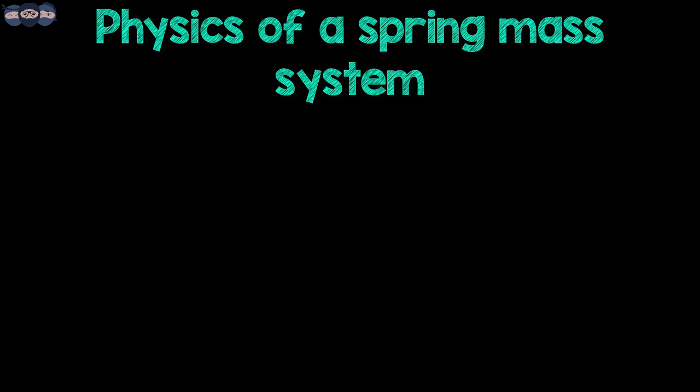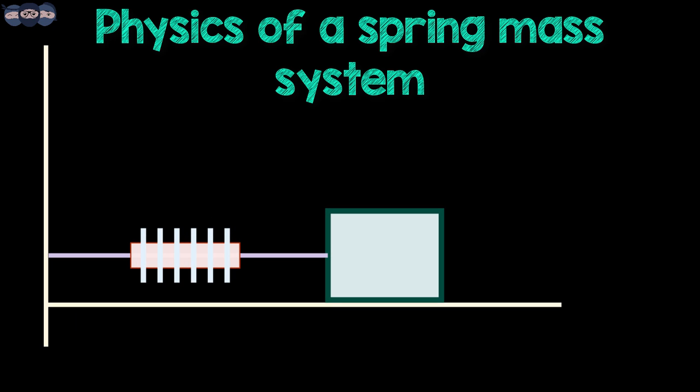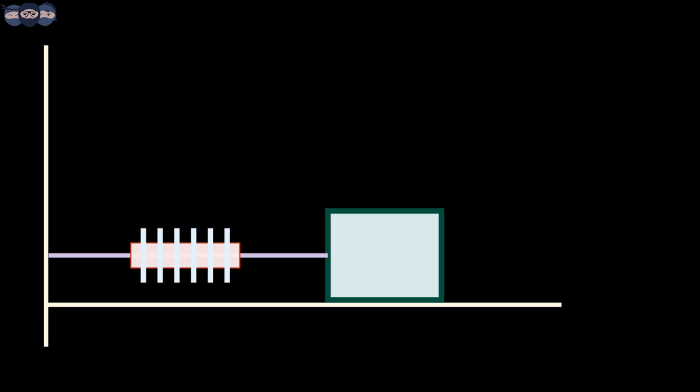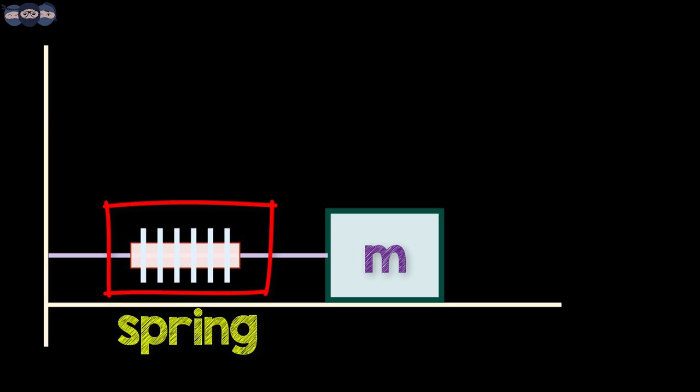First, let's start by understanding the basic physics of acceleration measurement using a spring and mass system. As seen in the diagram, a body of mass M is attached to a wall by a spring having spring coefficient k.